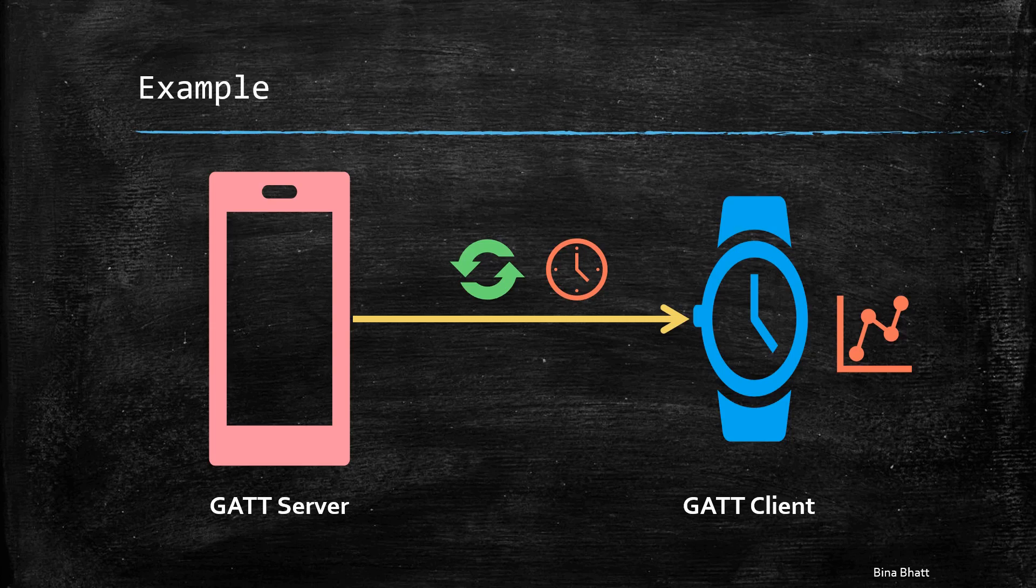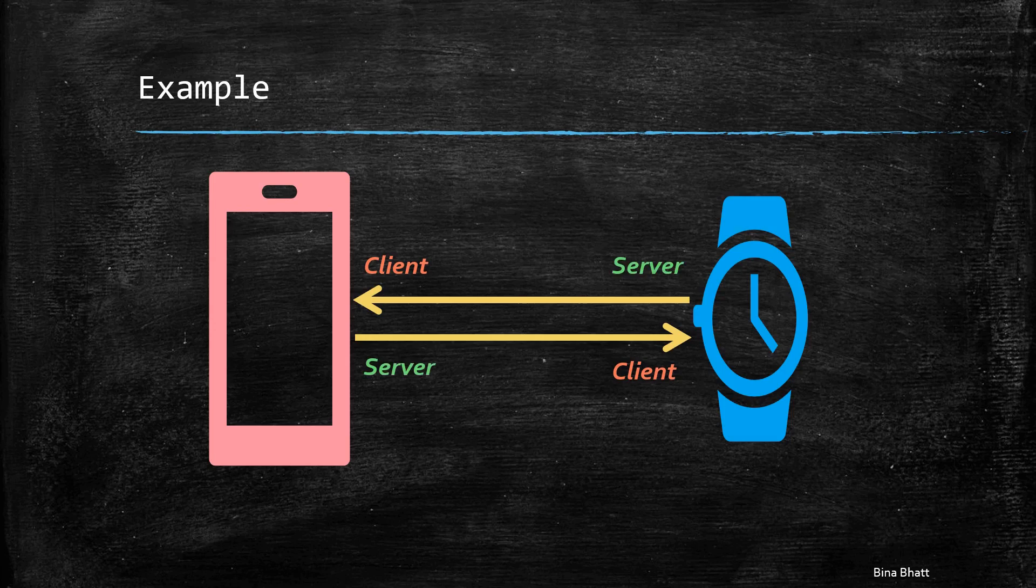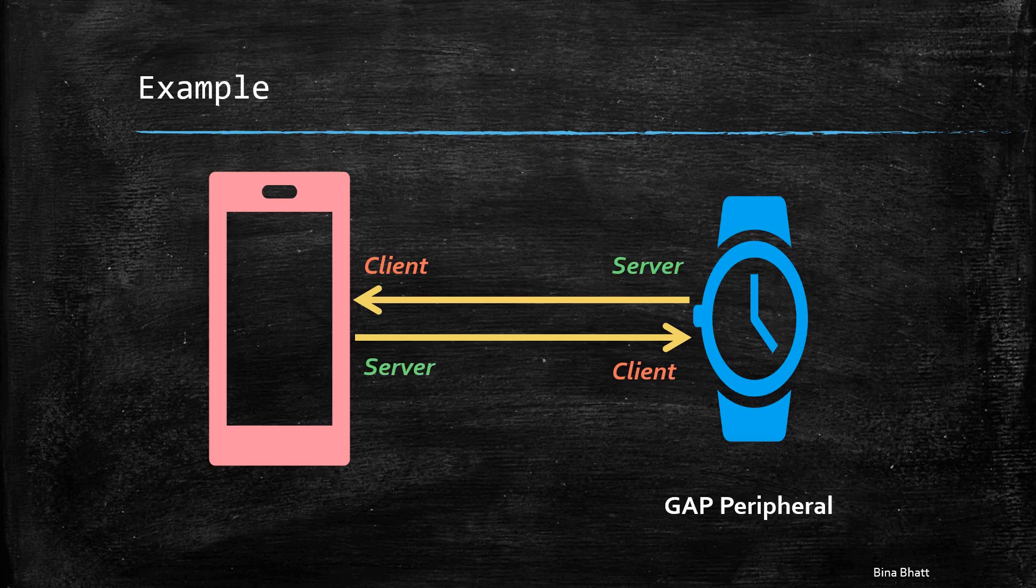Thus, it is evident that the direction of data flow decides whether a particular device is a GATT client or a GATT server. But the GAP roles remain the same throughout the transaction.